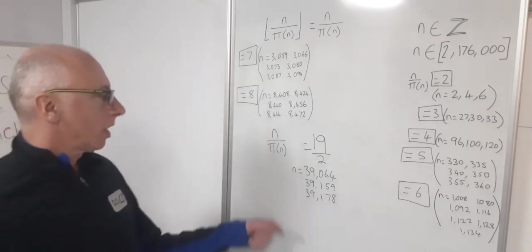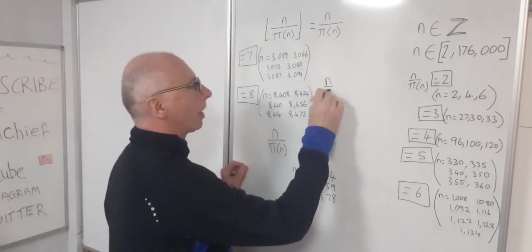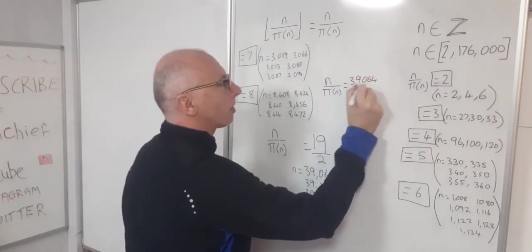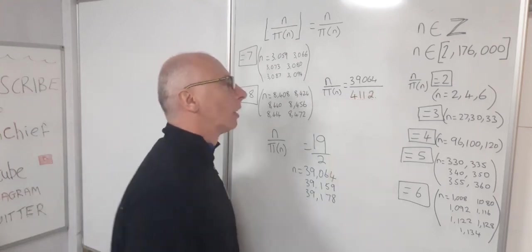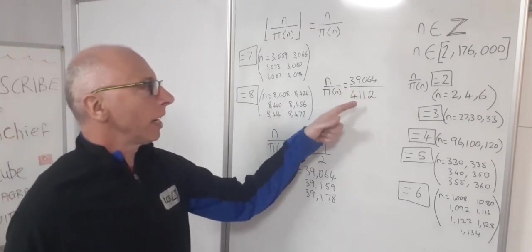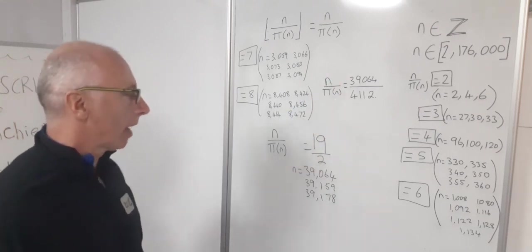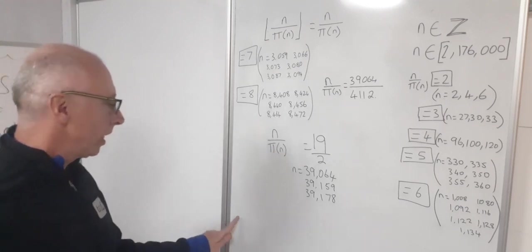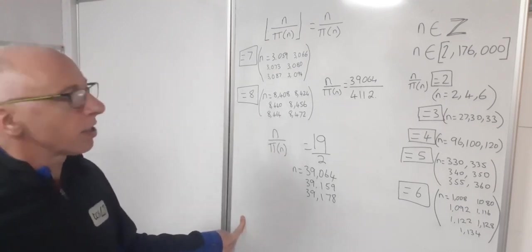So if we put that into our calculator, so n over pi of n, that would equal 39,064. So we're now starting to find out there's a lot of prime numbers up to in here, up to including here, but the gaps now are starting to get a little bit bigger. Okay, so now I'm just going to clear the board here for the 9 and then I'm going to show you 10 and an 11 and then I'm going to see if we can find a 12.